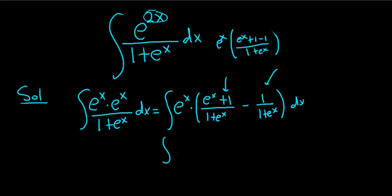So this becomes e to the x. These cancel, right? You just get 1 minus 1 over 1 plus e to the x.